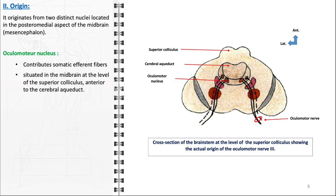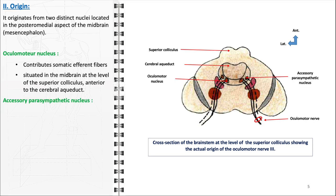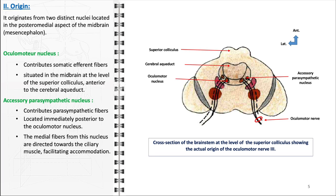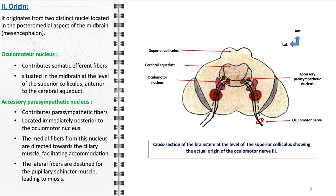Adjacent to the oculomotor nucleus lies the accessory parasympathetic nucleus, contributing parasympathetic fibers and positioned immediately posterior to the oculomotor nucleus. The fibers from this nucleus play a pivotal role in the autonomic control of the eye. Medial fibers from this nucleus are directed towards the ciliary muscle, integral for the process of accommodation. The lateral fibers are targeted towards the pupillary sphincter muscle, inducing meiosis — the constriction of the pupil — an essential response for regulating the amount of light entering the eye and aiding in near-vision tasks.